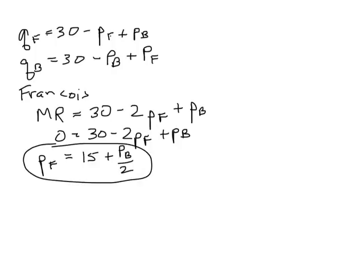That's Francois' reaction function. Babette's reaction function is going to be similar: 15 plus PF over 2. Remember that equilibrium in this type of problem comes where they actually produce the anticipated amount.